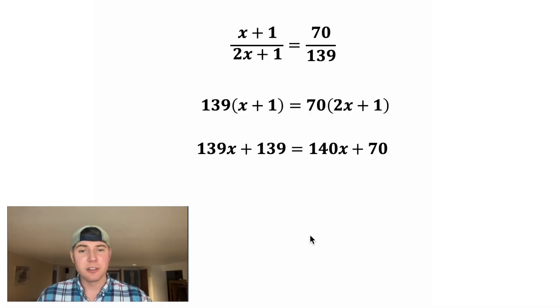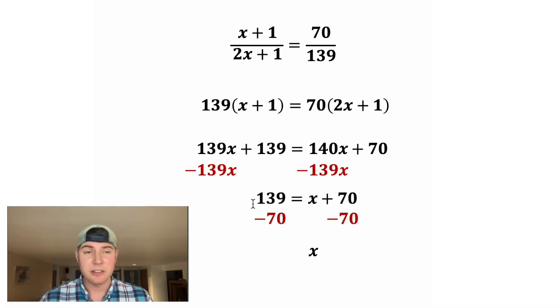Now we have an x on both sides, so let's subtract 139x from both sides. These cancel, so on the left-hand side, we only have 139. And on the right-hand side, 140x minus 139x is just x. And we still have the plus 70. And on the left-hand side, 139 minus 70 is 69. Nice. That is the answer to our question, so we can put a box around it. How exciting.